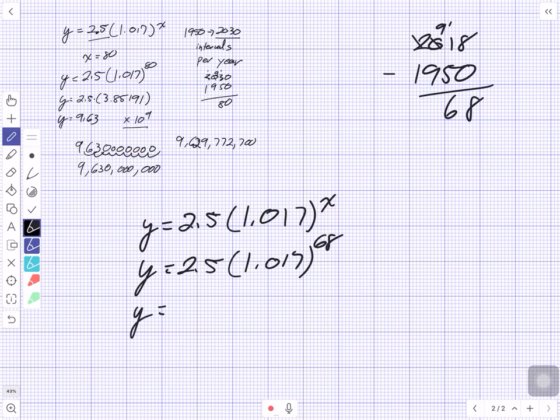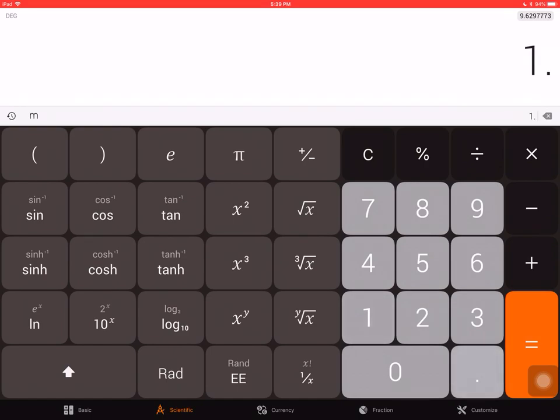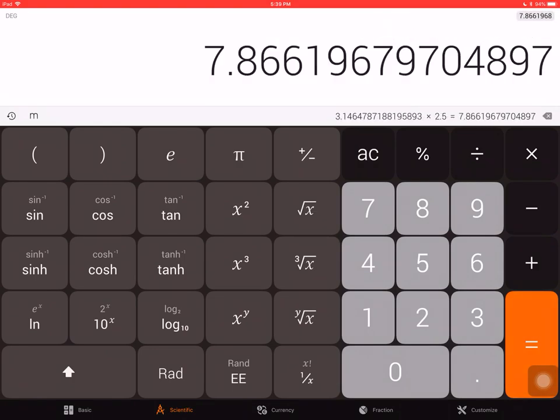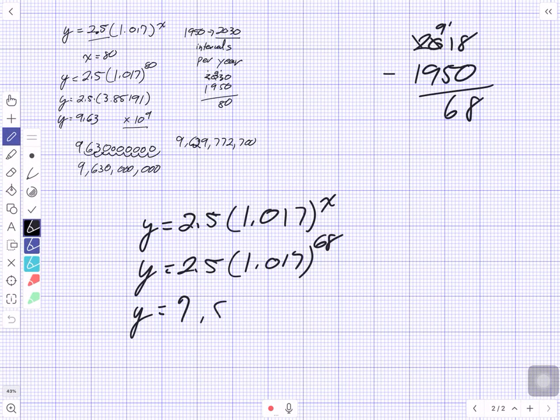So I'm going to do this all in one calculation on the calculator. Let's go to the calculator, clear it. 1.017 to the power of 68 equals times 2.5. It says there should be 7.8662 billion.